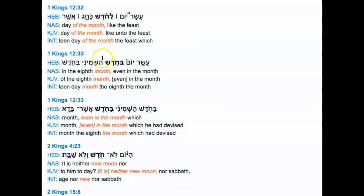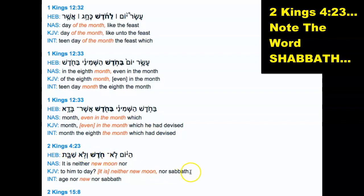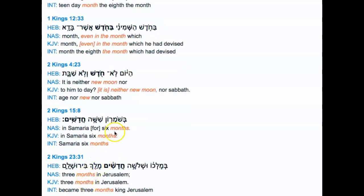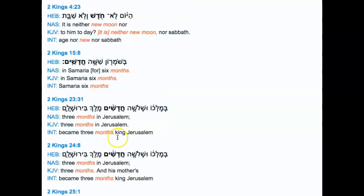Much of the usage for kadash means 'month' throughout 1 Kings. But notice what happens in 2 Kings 4:23, where it also mentions the word Sabbath — suddenly it goes from 'month' to 'new moon.' In 2 Kings the word 'month' is used throughout, but when it's next to a Shabbat, it changes to 'new moon.' This is similar to how in the resurrection account, the translators changed the meaning only when it discussed the Messiah being resurrected — the translators adding and taking away.